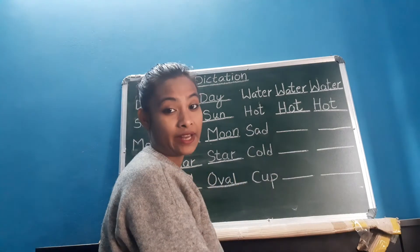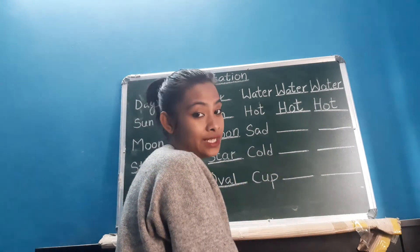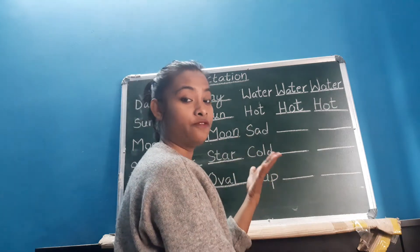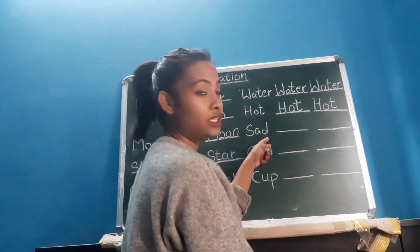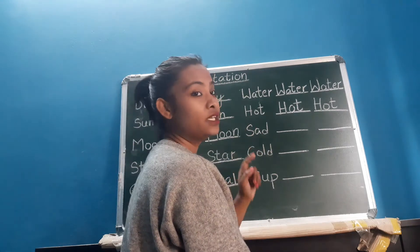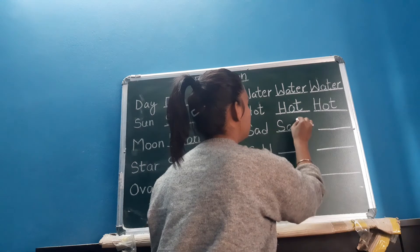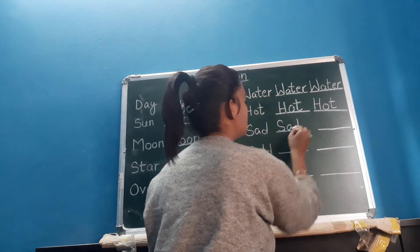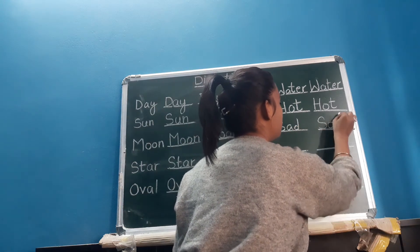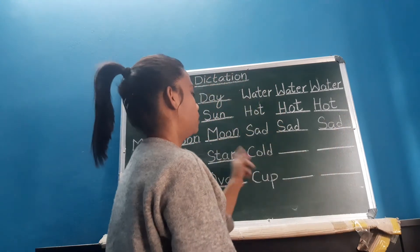Next word: S, A, D — sad. Whenever you are not happy, you feel sad, yes? Sad is an expression, a feeling. S, A, D — sad. Again, S, A, D — sad. S, A, D — sad. Again, S, A, D — sad. All right?